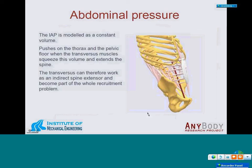The intra-abdominal pressure is modeled as a constant volume that can push on the thorax and the pelvic floor when the transversus muscle squeezes this volume. In this way, this cylinder acts as a spine extensor. The transversus can work indirectly as a spine extensor, thereby becoming part of the whole muscle recruitment problem. If the model determines it can use intra-abdominal pressure to balance an external force, it will activate the transversus, which creates pressure, and the pressurized cylinder will push on the thorax and pelvic floor.